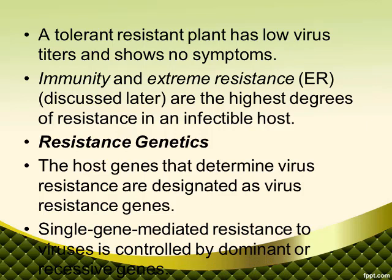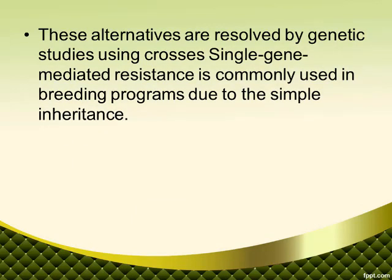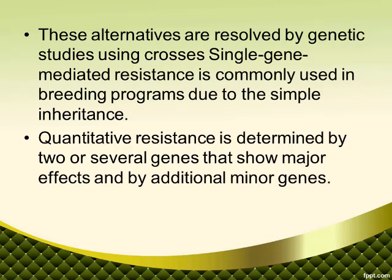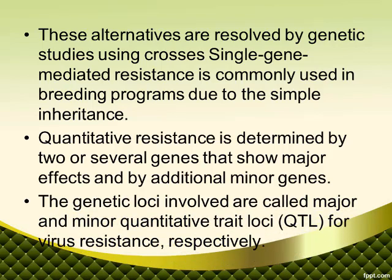Single gene-mediated resistance to viruses is controlled by dominant or recessive genes. These alternatives are resolved by genetic studies using crosses. Single gene-mediated resistance is commonly used in breeding programs due to the simple inheritance. Quantitative resistance is determined by two or several genes that show major effects, along with additional minor genes. The genetic loci involved are called major and minor quantitative trait loci (QTL) for virus resistance respectively.